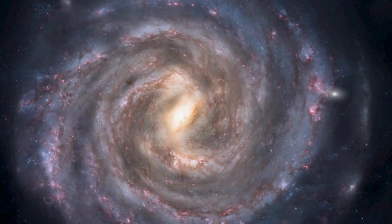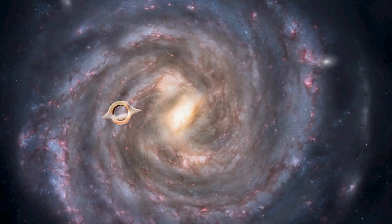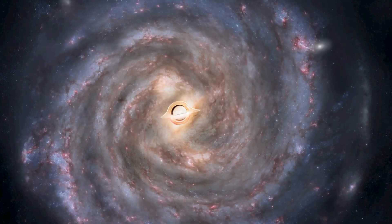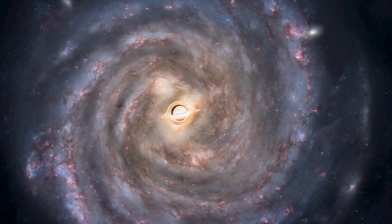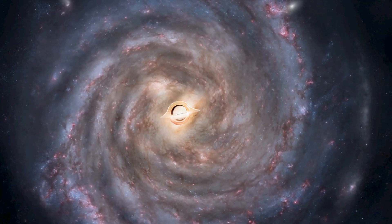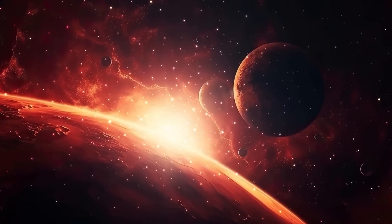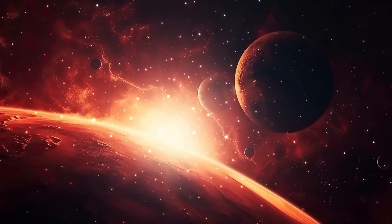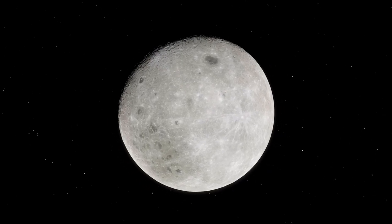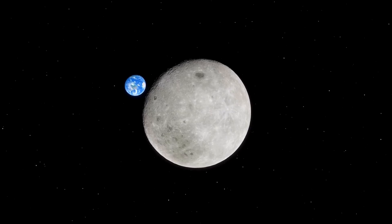Imagine what would happen if TON 618 were at the center of the Milky Way instead of Sagittarius A. Our solar system would probably have disappeared before it even emerged, or different star systems would have formed. Because, with the terrifying gravitational pull of TON 618, it seems highly unlikely that our solar system could have formed in its current state.